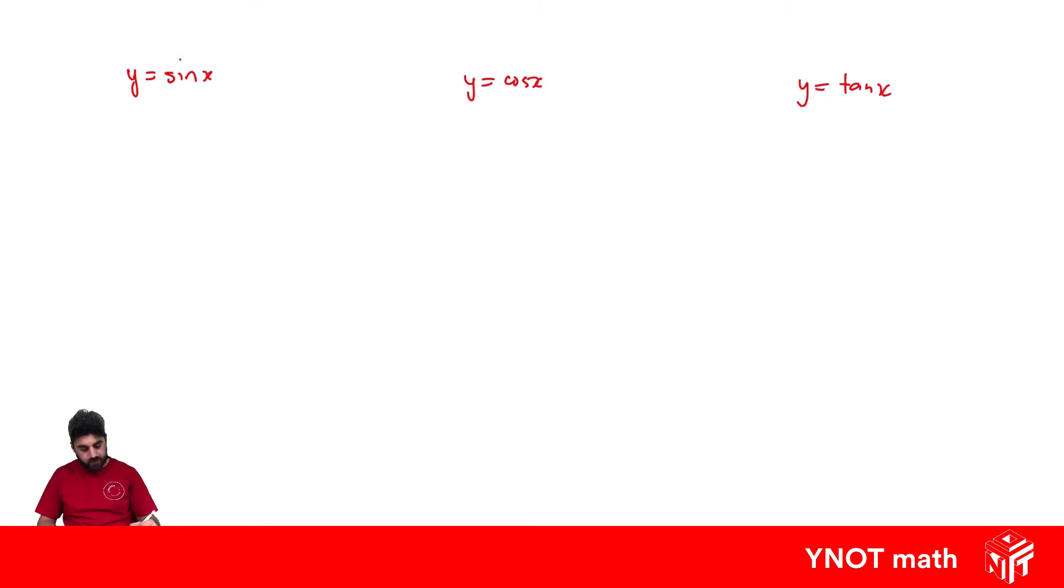Let's start with y equals sine x. Let's draw the x, y axis. Now the graph of y equals sine x, if you start from 0, it goes up, down and back.